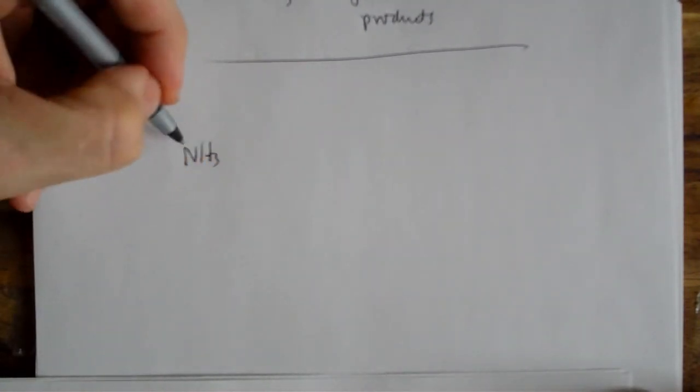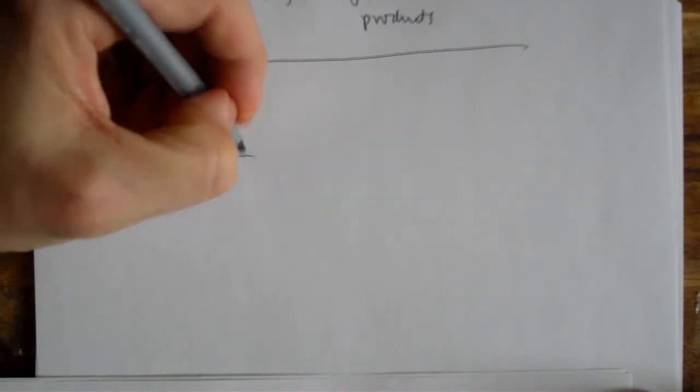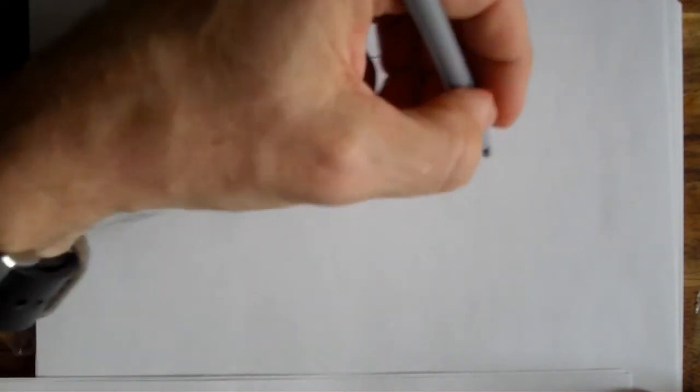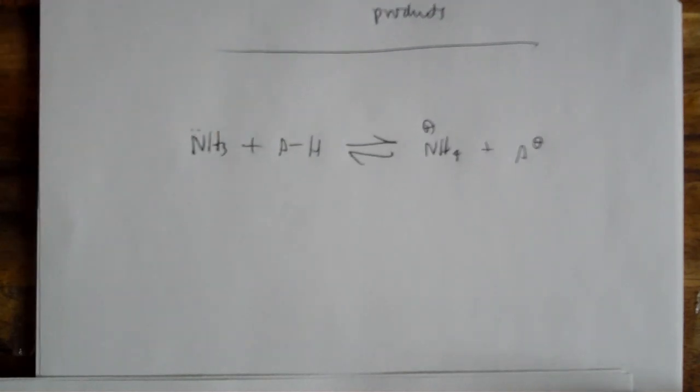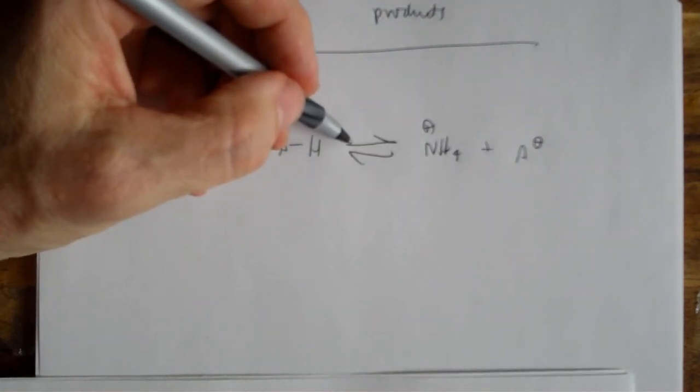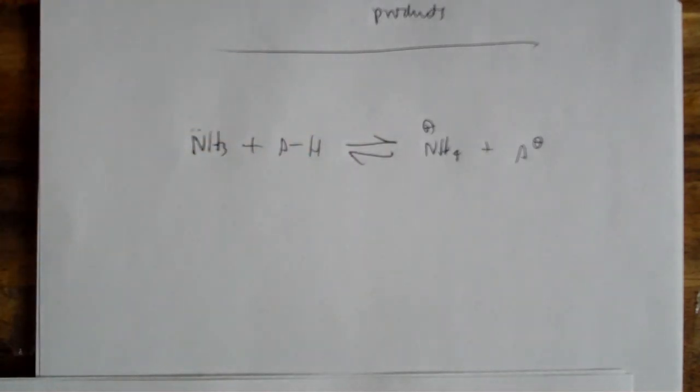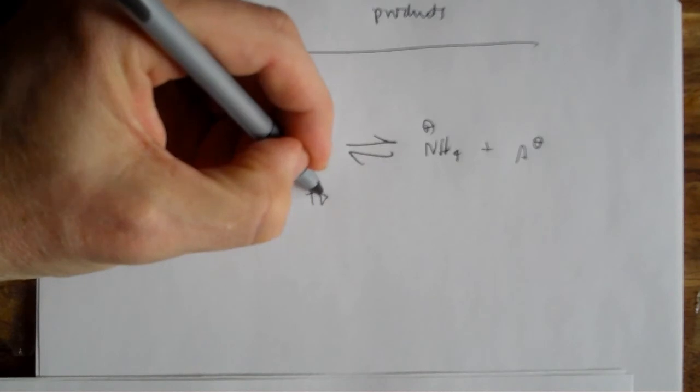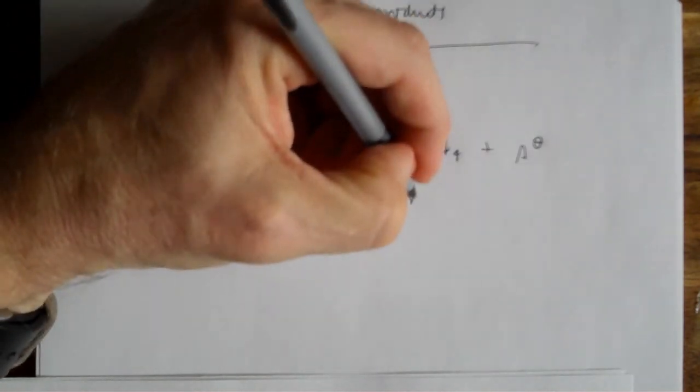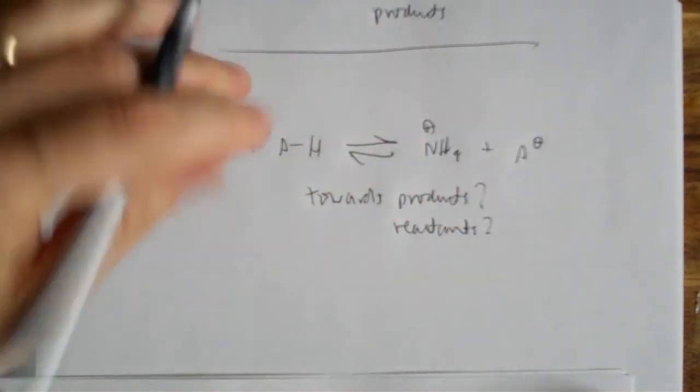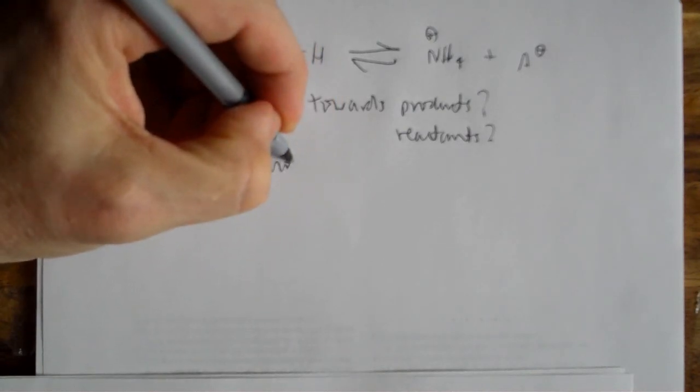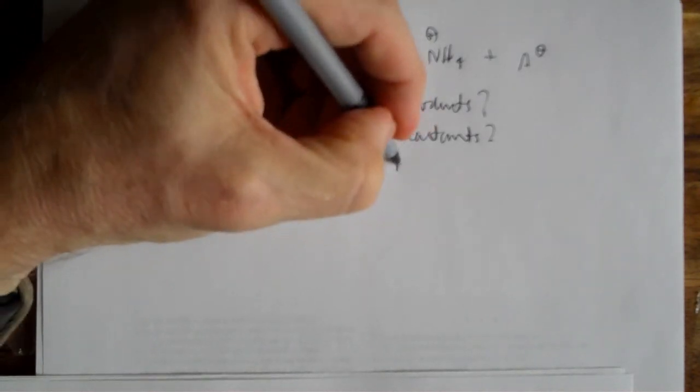And if we take that plus an acid, we're going to get NH4 plus the conjugate base of that acid. And the question is which way is this equilibrium going to lie? Is it going to lie towards the products or towards the reactants? And I'd like you to tell me towards products or reactants. And how can we know? Important question, how do we know which way this lies?